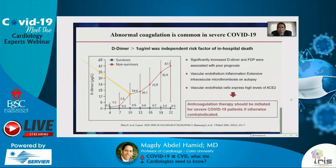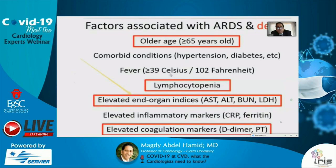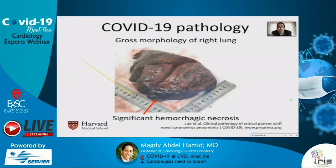Factors associated with increased incidence of ARDS and increased mortality include: age above 65 years, comorbid conditions like hypertension and diabetes, fever, lymphopenia, elevated end-organ indices like liver enzymes and BUN, elevated inflammatory markers such as CRP and ferritin, and increased coagulation markers like D-dimer and prothrombin time. Post-mortem findings in a patient who died from COVID-19 show significant hemorrhagic necrosis in the lungs.